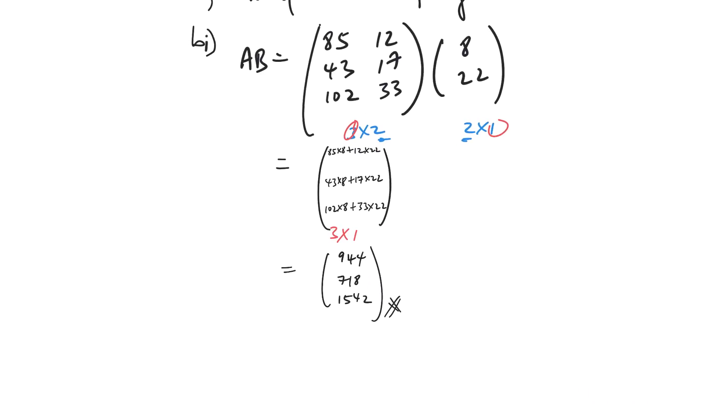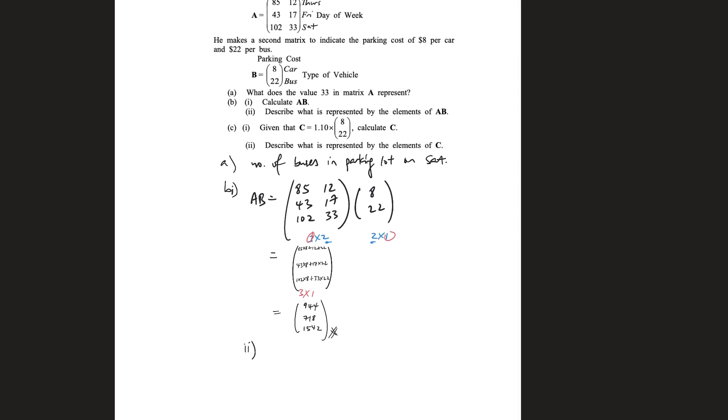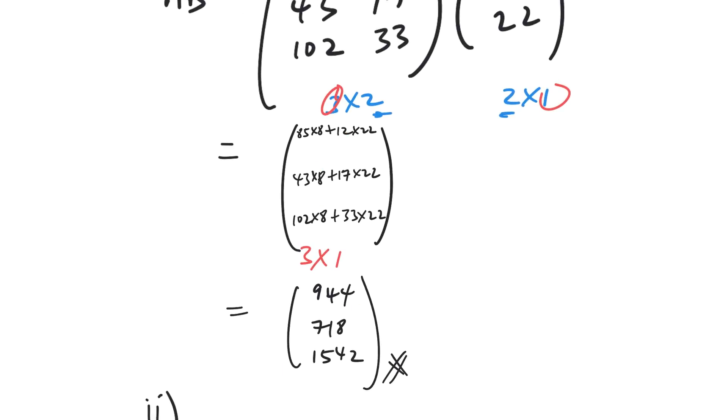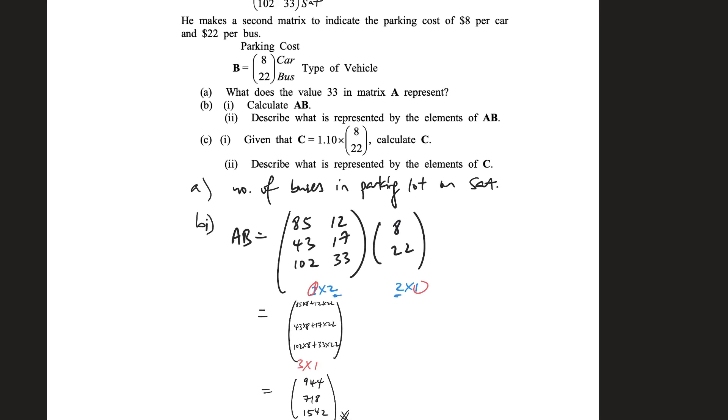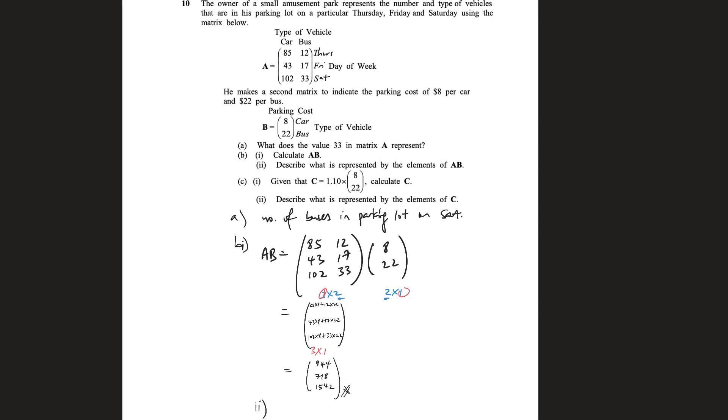Now they say what is represented. So that makes sense because these are all real life scenarios and if you don't make sense of the matrix, it's really pointless. You don't just do math for no reason. So once again, we look at the working. It's hard to find out what it means over here, but let's look at the working. 85 times 8. All right, so let's see. 85 times 8 is basically, 85 came from here, which is, okay, I'm going to zoom out a bit. 85 cars multiplied by 8, multiplied by how much it costs to park a car.